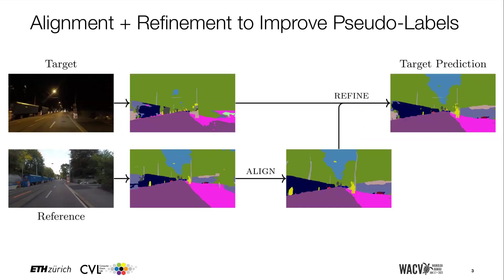Current state-of-the-art domain adaptation methods for semantic segmentation use self-training. Our core idea is to improve the pseudo labels for self-training using the reference predictions in two steps. The first step is alignment, where we aim to spatially align the reference image with the target image through warping. The second step is the refinement of the target predictions.